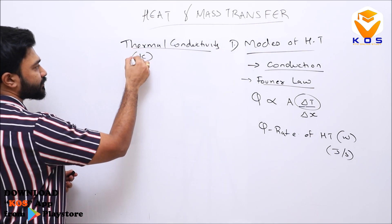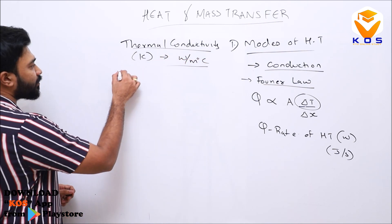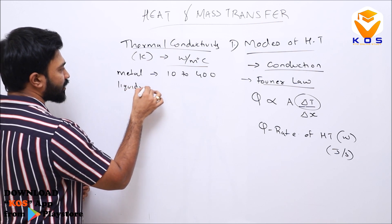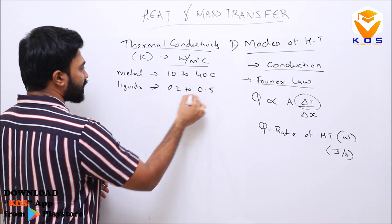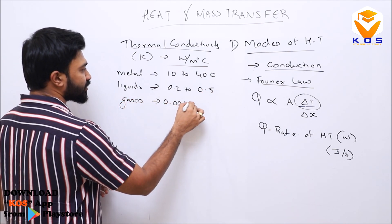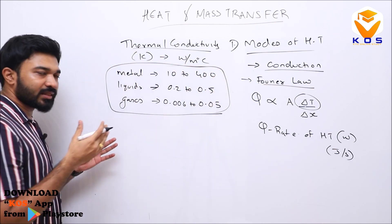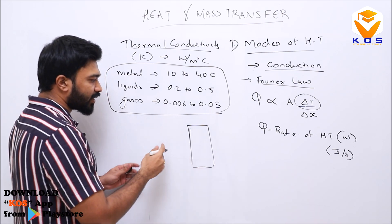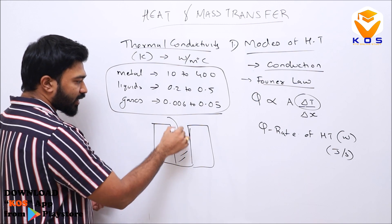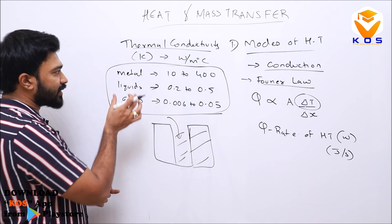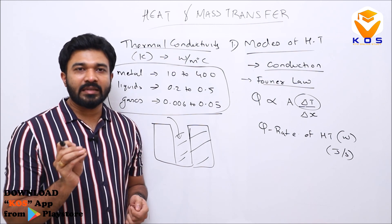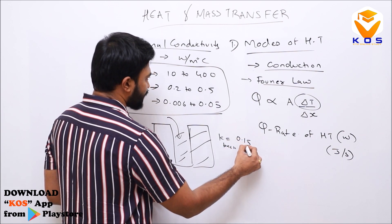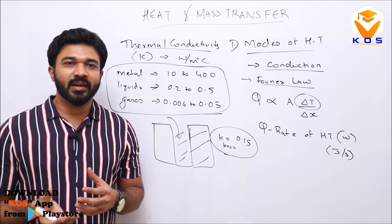Thermal conductivity k has unit watts per meter degree Celsius. For metals, k ranges from 10 to 400; for liquids, it varies from 0.2 to 0.5; and for gases, it is 0.006 to 0.5. These values are important to know for different materials. For example, in a blast furnace, we build it with bricks because brick has a very small k value — approximately 0.15.